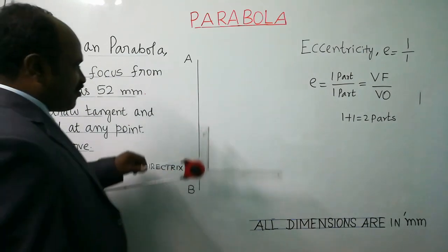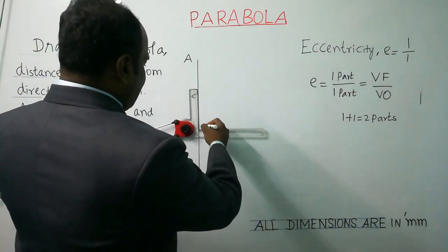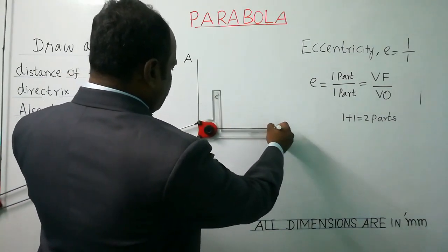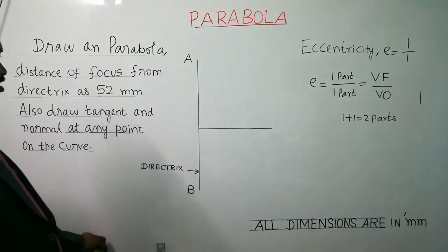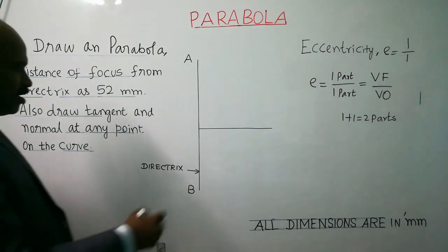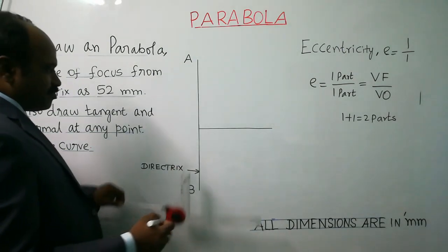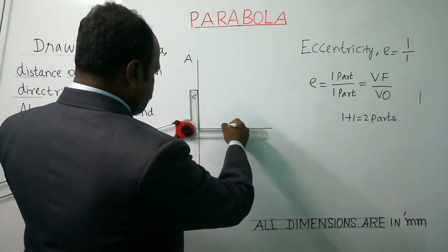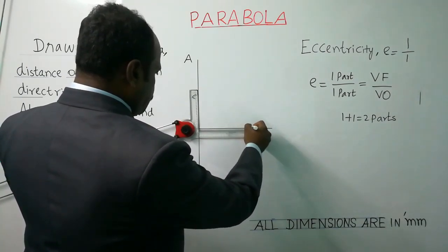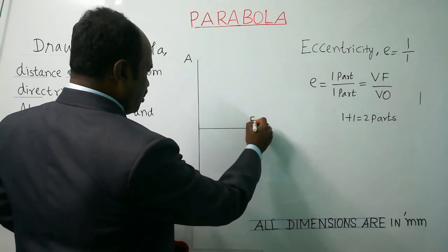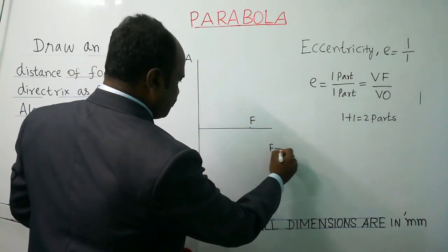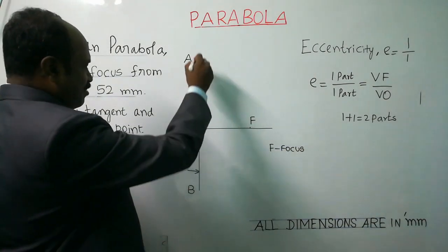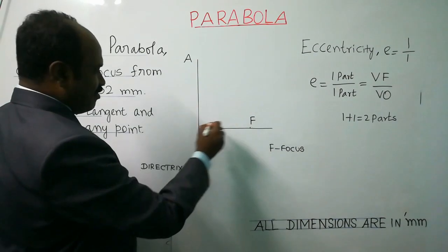Using the horizontal scale of your drafter, draw a horizontal line — this will be the axis for the parabola. It is given that the distance of focus from the directrix is 52 mm, so locate a point at a distance of 52 mm and mark it as F, which stands for focus. The point of intersection between the directrix and the horizontal line is marked as O.